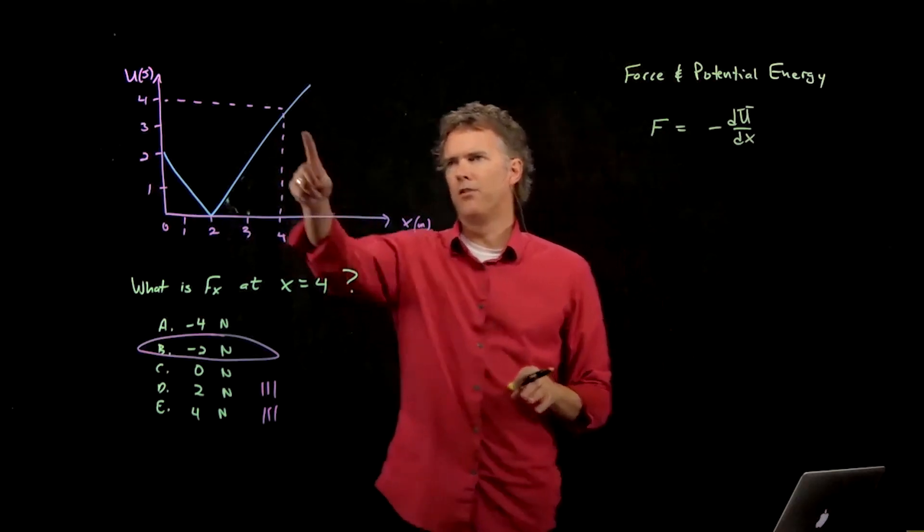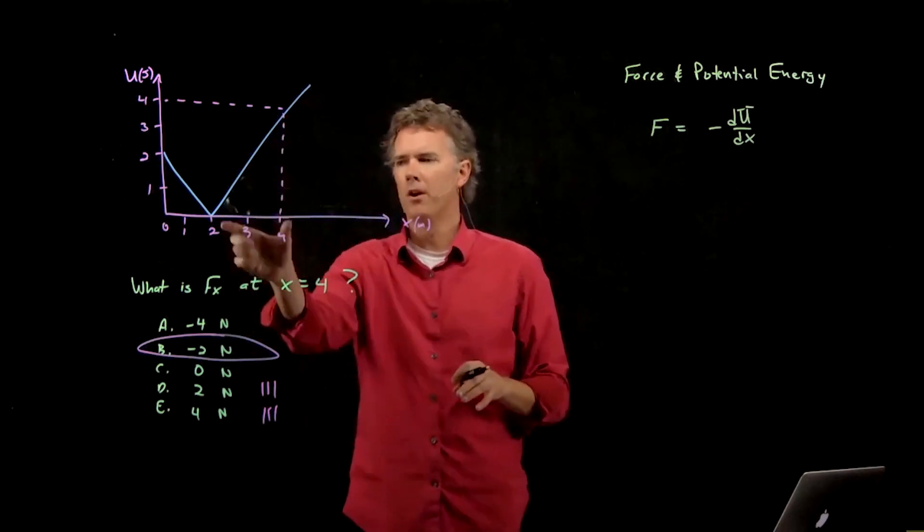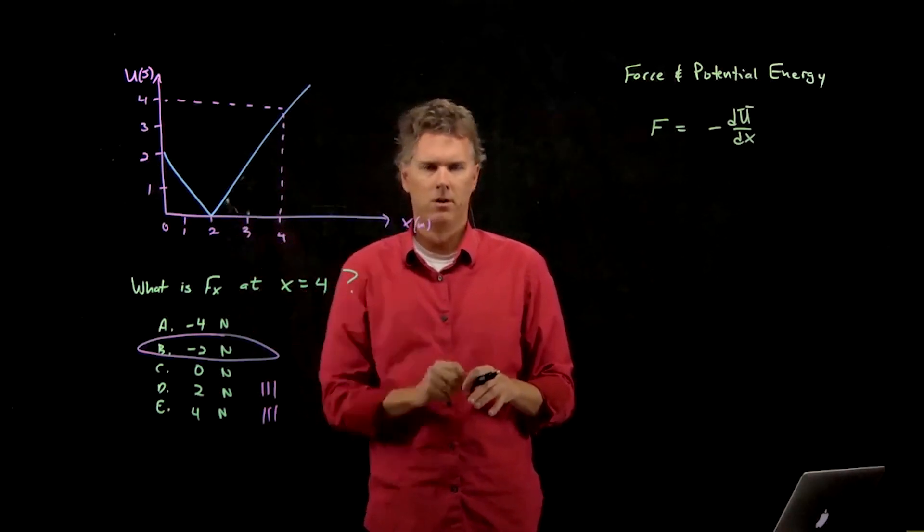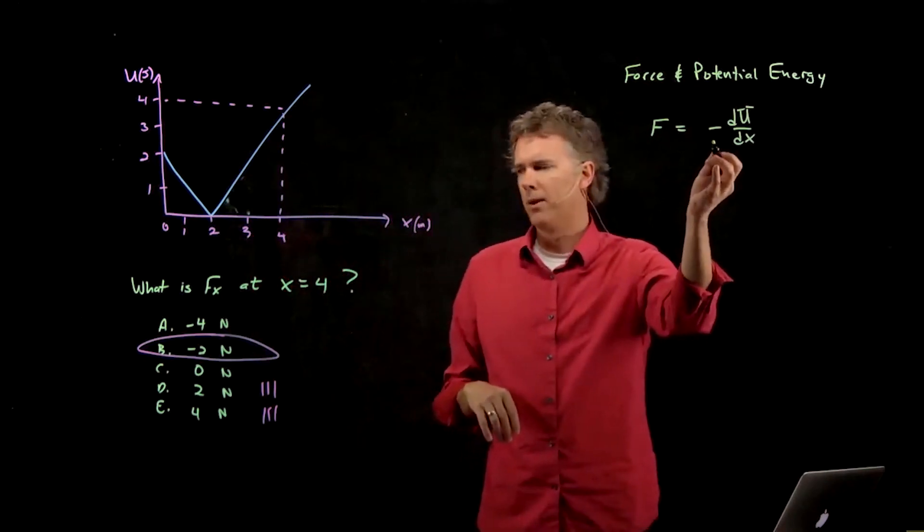So, if I look at the slope right here, the slope of this thing is, of course, two, because we've gone up four in a distance of two. But I have to take the negative sign of that, and that's where we get our negative two.